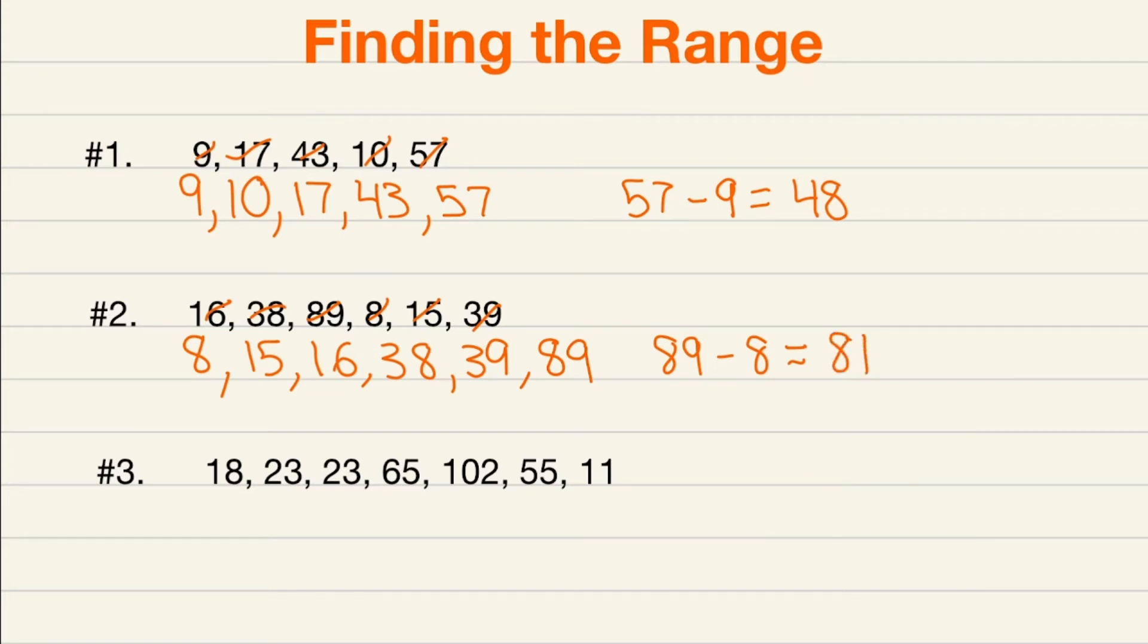Now let's move on to number three. Let's order them from least to greatest. We have 11, followed by 18, we have two 23s, we have a 55, 65, and 102. I'm going to look for my largest number which is 102, because I ordered it for us already, minus our smallest number which is 11. And 102 minus 11 is going to give us 91 for our range.